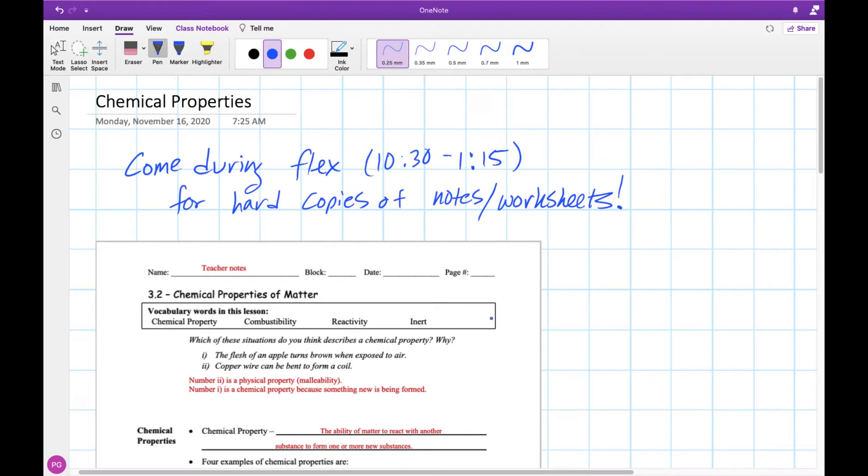Hey there folks! Mr. G here with another educational video. This time we're going to be talking about chemical properties. Last time we talked about physical properties including density, now we're going to talk about chemical properties, which is kind of the other type of properties that matter can have.